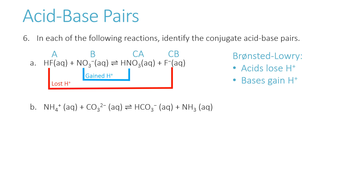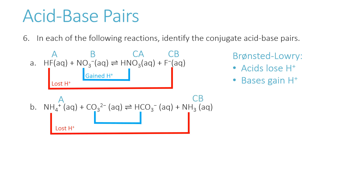Applying the same reasoning to the next reaction: NH4⁺ loses an H⁺ to become NH3, so NH4⁺ is the acid and NH3 is the conjugate base. Then CO3²⁻ gains an H⁺ to become HCO3⁻, so the carbonate ion is acting as a base and HCO3⁻ is the conjugate acid.